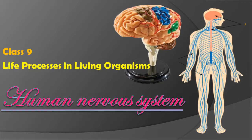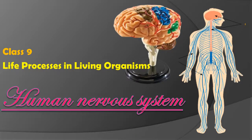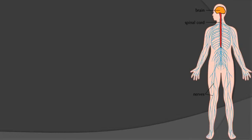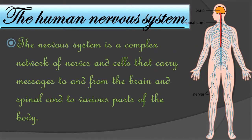You can check out the description box below to understand completely about this lesson. The brain is the main part of the central nervous system. The nervous system is a complex network of nerves and cells that carry messages to and from the brain and spinal cord to various parts of the body.